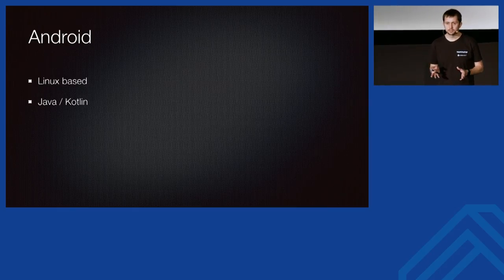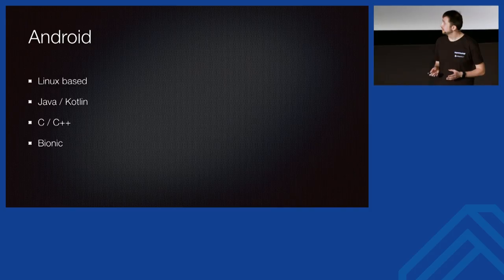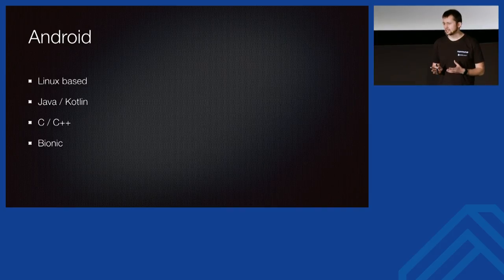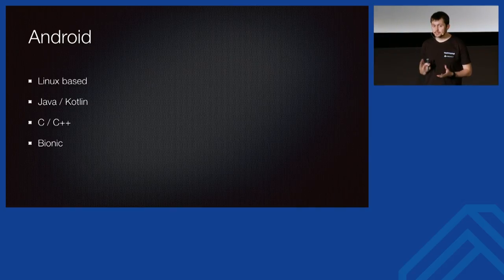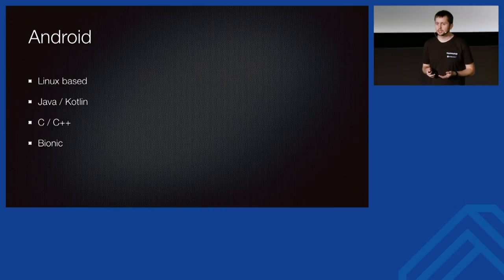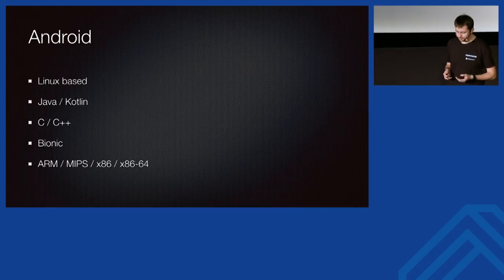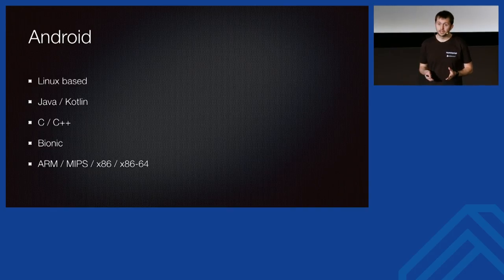Let's talk about Android. It is based on Linux. The most important languages are Java and Kotlin, but C and C++ are also supported. They use Bionic instead of glibc — a library Google produced, likely due to licensing issues. Depending on the Android NDK version, you may have different support for libc features, so sometimes when writing C or C++ code you must look for substitutes. Android is used on a variety of devices with different CPU architectures: ARM, MIPS, x86, x86_64.